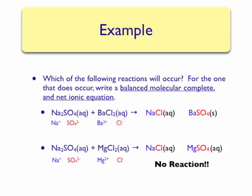Now that we know that the first reaction will yield a precipitation reaction, we can balance the molecular equation and write complete and net ionic equations. To balance the equation, we can place a 2 in front of the sodium chloride. Now our equation is balanced.